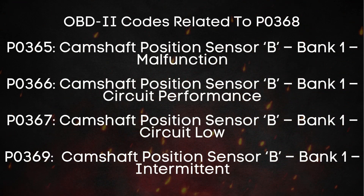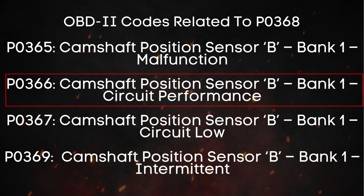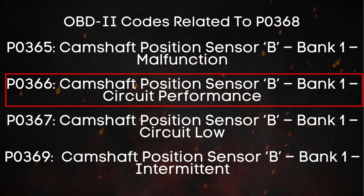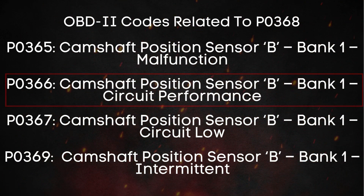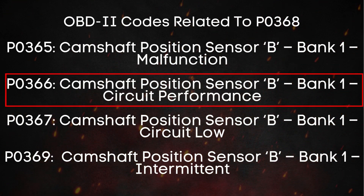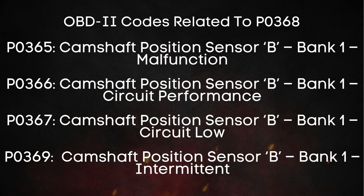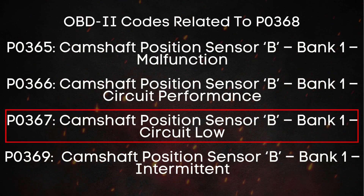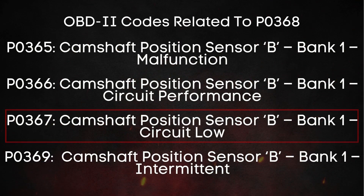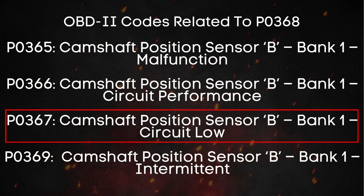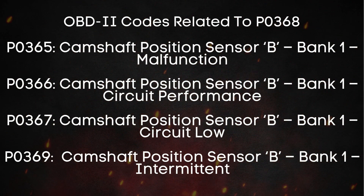Then there's P0366, which means Exhaust Camshaft Position Sensor for Bank 1 Has Performance Problem. In simple terms, it means the signal from the exhaust camshaft sensor on Bank 1 is either out of range or not performing as expected. It could be due to incorrect timing, interference, or a weak signal. On the flip side, you might see P0367 — Exhaust Camshaft Position Sensor for Bank 1 circuit low — which usually indicates that the voltage in the sensor's signal is too low. It could be caused by a dying sensor, damaged wiring, or corroded connections.